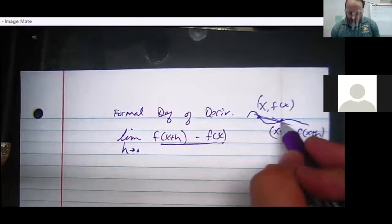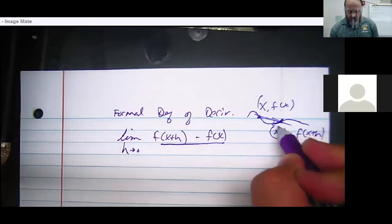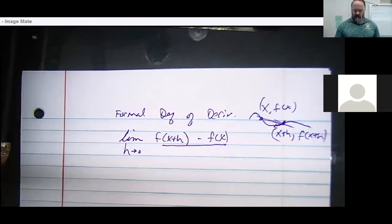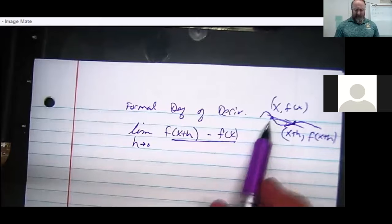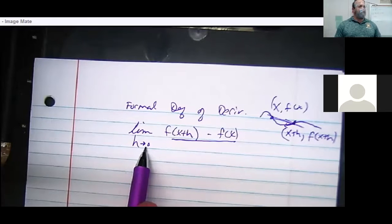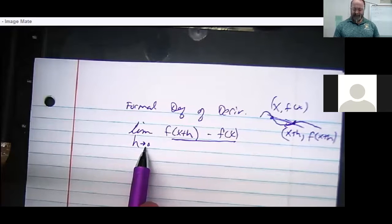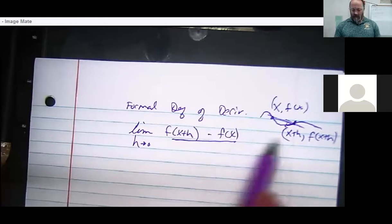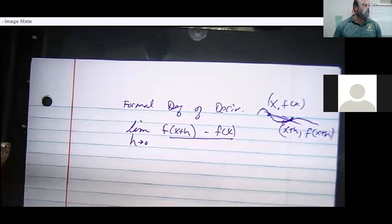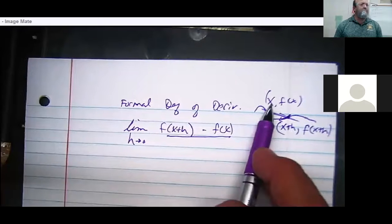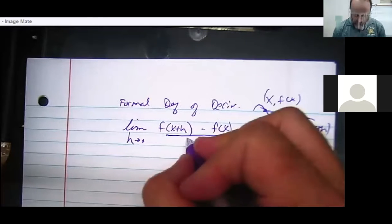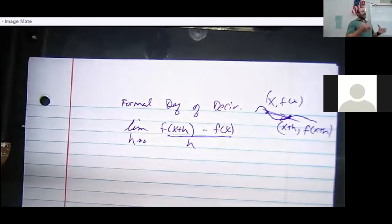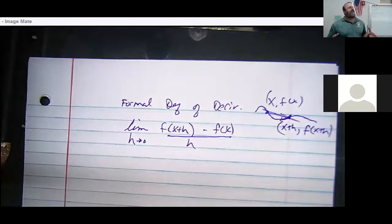If you drag h to zero, this second point is going to get closer and closer to the first one — like a magnet. The limit as h goes to zero means you can get infinitely close but never quite make it. The run becomes x plus h minus x, which is just h. This lets me find the slope of the line literally anywhere on the curve.